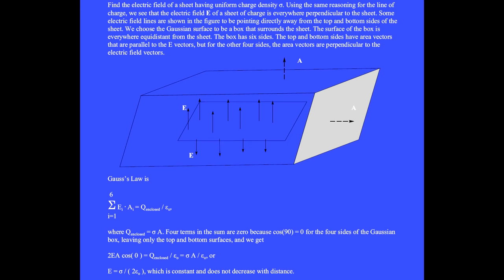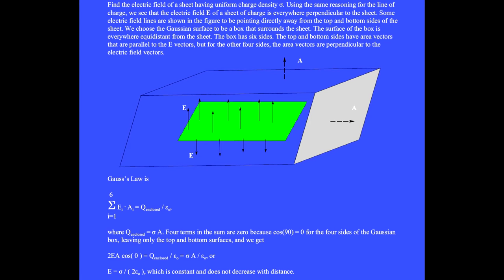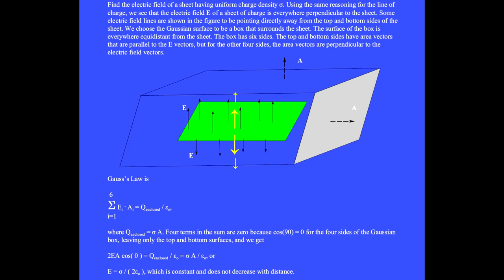This sheet of charge consists of a set of lines of charge. Using the same symmetry reasoning, the electric field of a sheet of charge is everywhere perpendicular to the sheet. We will find the electric field of a sheet with uniform charge density sigma in coulombs per square meter. The electric field lines point directly away from the top and bottom sides of the sheet. We choose the Gaussian surface to be a box surrounding the sheet, with its surface everywhere equidistant from the sheet, so the electric field has constant magnitude and comes out of the integral.